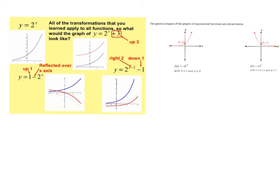You can also have different translations. A number being added or subtracted at the beginning or end — not with the x — is going to shift it up or down. A number being added or subtracted in the exponent is going to shift it right or left. Remember, if that's subtraction, it shifts it to the right; if it's addition, it shifts it to the left. It's backwards from what you might think.